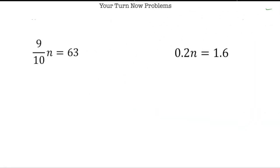Hey, everybody. Welcome back. Let's see how you did with these practice problems. So the first problem you had to solve was 9 tenths times n equals 63. So again, in order to divide by 9 tenths, I need to multiply both sides by the reciprocal, which is going to be 10 ninths. So I'm going to multiply both sides by 10 over 9.